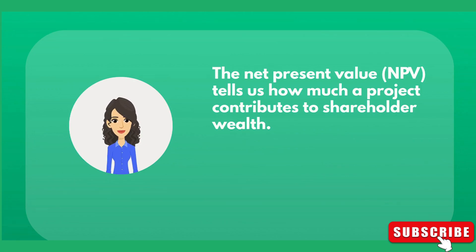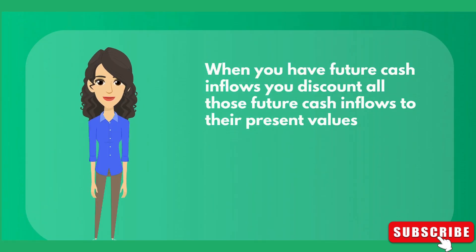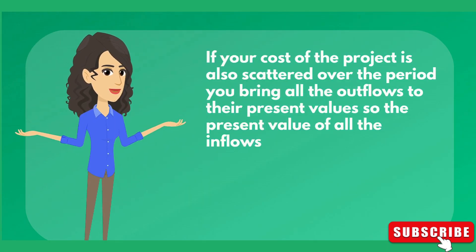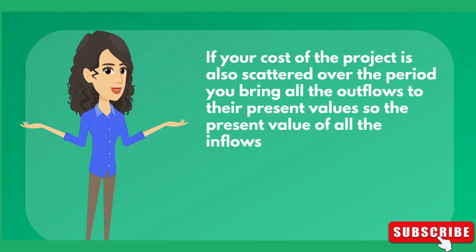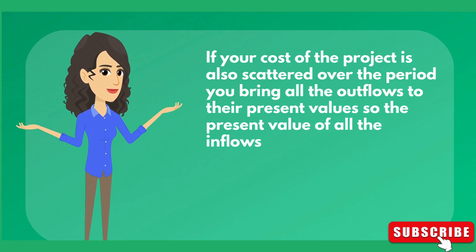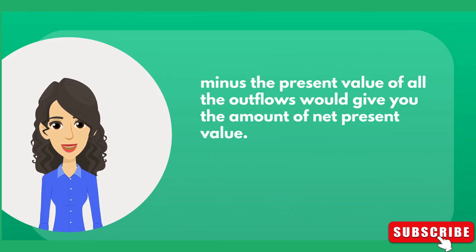The net present value tells us how much a project contributes to shareholder wealth. When you have future cash inflows, you discount all those future cash inflows to their present values — that will be the total present value of inflows. From that you subtract the initial amount of investment. If your cost of the project is also scattered over the period, you bring all the outflows to their present value, so the present value of all the inflows minus the present value of all the outflows gives you the net present value.